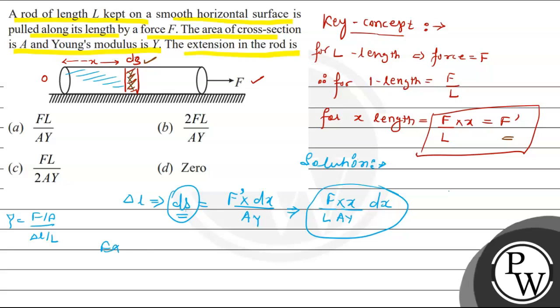Total extension is equal to integration of F X upon L A Y into dX, and that too from 0 to L, the total length. Then what will it be? F constant, L constant, A constant, Y constant. 0 to L, we have to integrate X into dX.